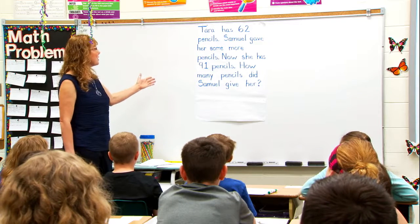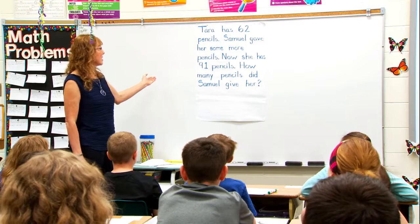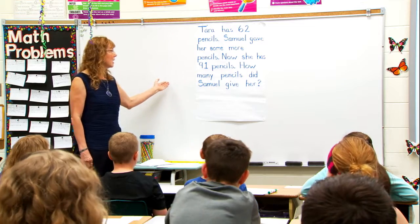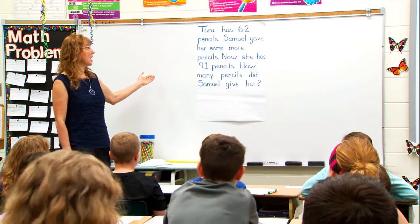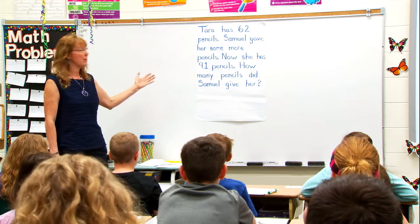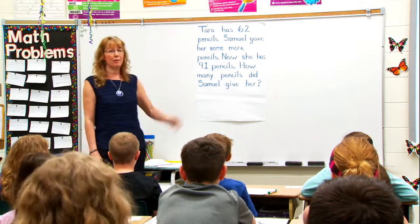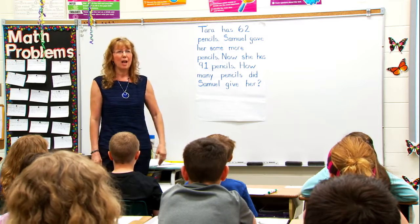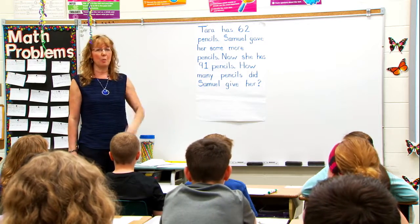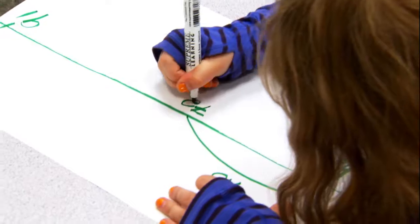Tara has 62 pencils. Samuel gave her some more pencils. Now she has 91 pencils. How many pencils did Samuel give her? Today we're going to solve this problem with the open number line.